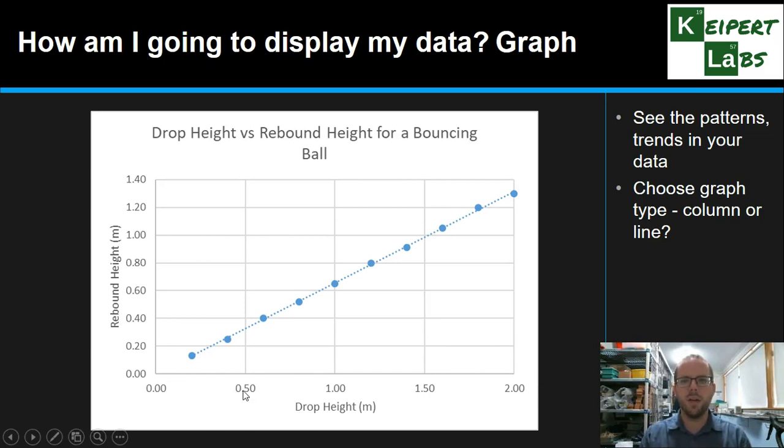But essentially it relates to what type of information are you putting on the bottom of your graph. Are you putting a number scale like this one? In which case it needs to be a line graph. Or are we using word categories? Like type of surface being carpet, lino, concrete, that sort of thing where it's a word description rather than a number measurement.